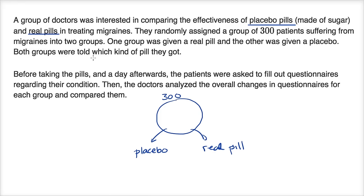Both groups were told which kind of pill they got. That is sketchy, because the whole point about a placebo is that you think you got the real thing, or you think you might have gotten the real thing. And if you're told you got a placebo, that tends to undermine the placebo effect. If you're just told you're given a sugar pill, that right over there is definitely bad practice.